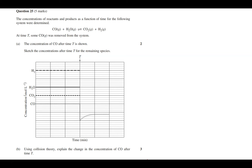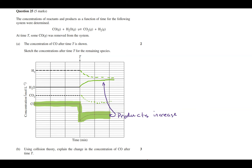Now we move into the multi-mark questions. In the first part we're asked to sketch the concentrations after time t for the water gas shift equation. Something has happened — carbon monoxide has been removed, as shown by the rapid drop in concentration. Carbon monoxide and water are both reactants. As one is removed, the system shifts to increase their concentrations, and the product concentrations start to decrease.